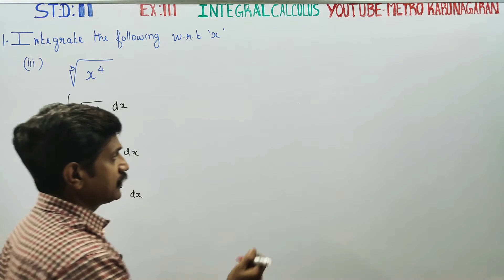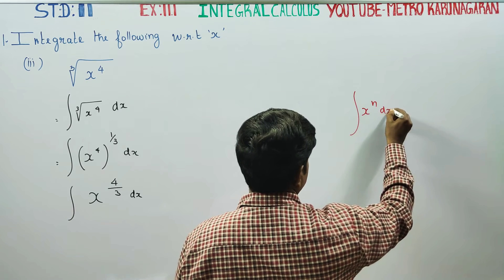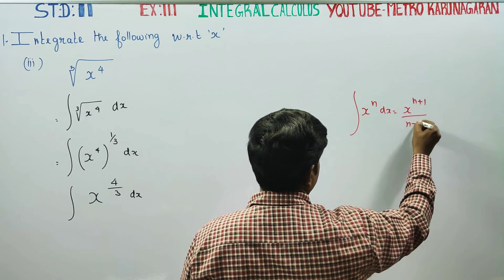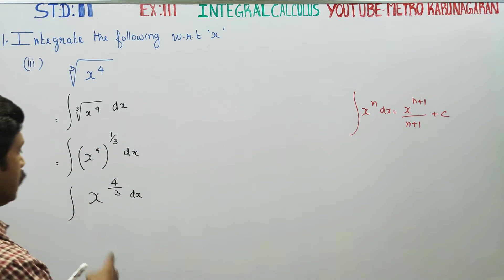For this integration formula, we are going to use this formula: integration of x power n dx. That is, denominator layer of x power plus c. Anything may be the power. This power is 4 by 3.